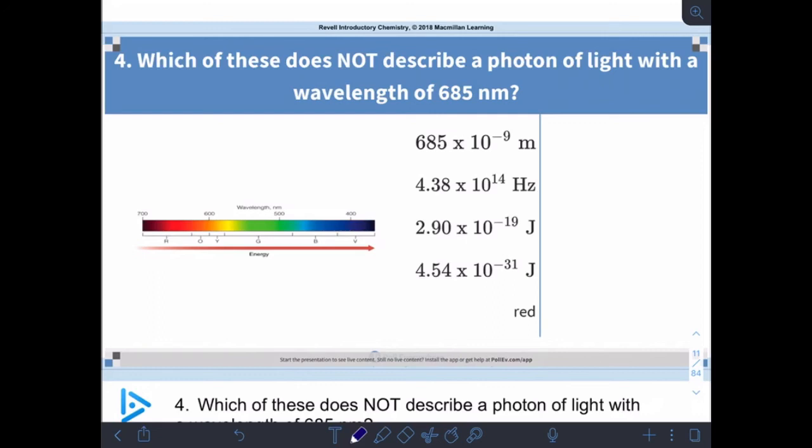Which of these does not describe a photon of light with a wavelength of 685 nanometers? We can go through and calculate all of these, but it would be very tedious. Let's think about some things on here. First let's look at the red. If we have 685 nanometers, that's sitting right about there on our spectrum, so that one's okay—it's definitely in the red range. As far as the rest of these, what I would suggest looking at is this stuff. All the problems we've done so far have had 10 to the minus 9 meters. If I wrote that in correct scientific notation, that would be 6.85 times 10 to the minus 7, and that's in the same range as the things we've seen. Same thing with the hertz, same thing with the joules.